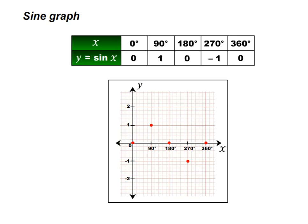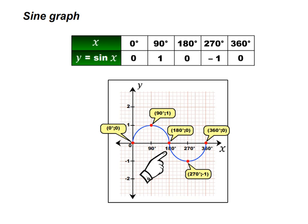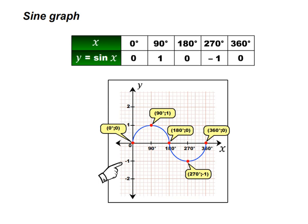No part of this graph is straight. If we join the dots, our graph should look like this. Remember that on the x-axis, y is equal to 0. Look at 0 degrees, 180 degrees, and 360 degrees — they all have the y coordinate being 0. The point at 90 degrees and 1 is the turning point. At 270 degrees and minus 1, they meet here.